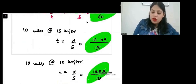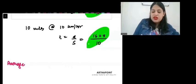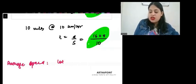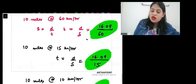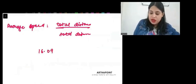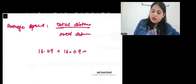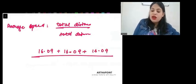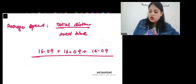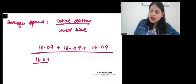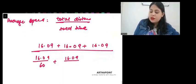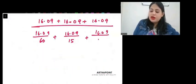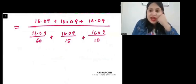So, now we want to ask, what is the average speed? So, average speed will be total distance by total time. Total distance 30 miles, 10 miles plus 10 miles plus 10 miles. So, total distance is 16.09 km plus 16.09 km plus 16.09 km. Total distance by total time. And total time taken is 16.09 divided by 60 plus 16.09 divided by 15 plus 16.09 divided by 10. So, this is the total time taken on day 2.